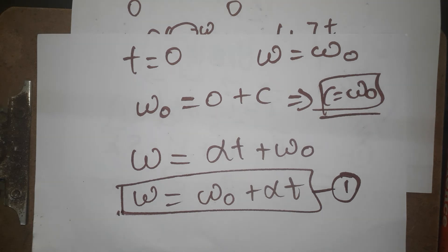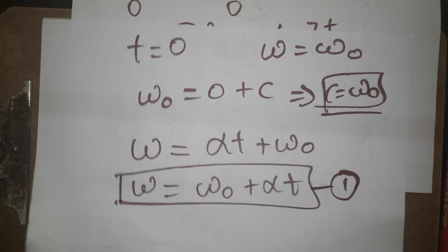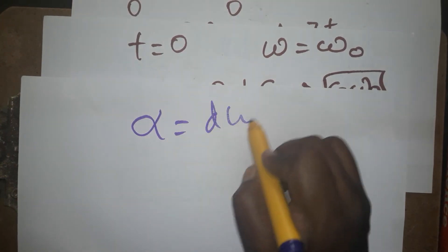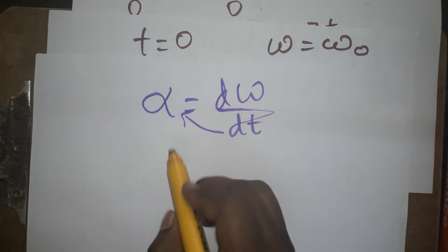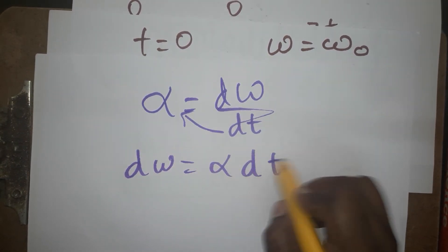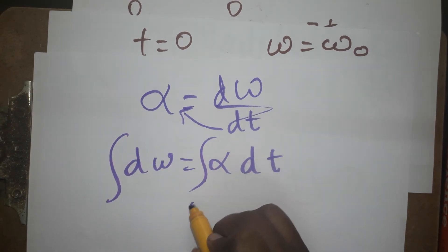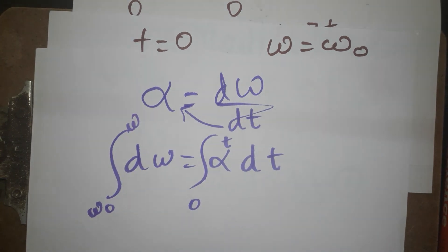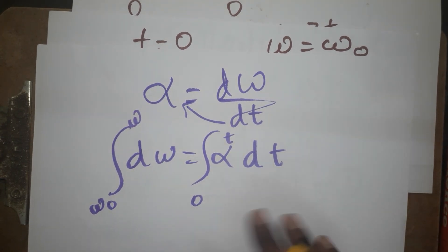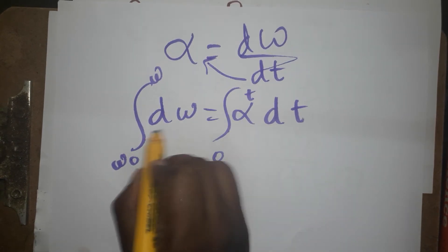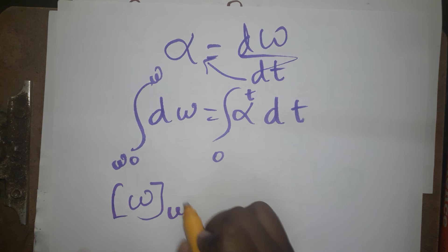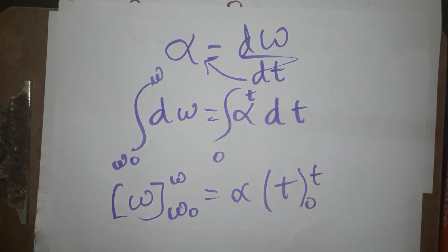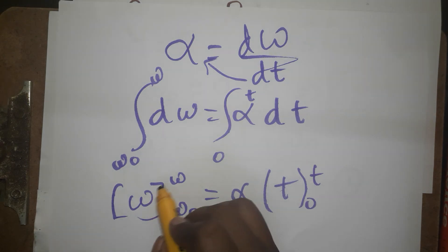Now for Method 2, we follow the same steps but with a small change — we use definite integrals instead of an integration constant. Angular acceleration equals angular velocity divided by time. Rearranging: d(omega) equals alpha dt. Integrate on both sides with limits: for angular velocity from omega naught to omega, and for time from 0 to t.